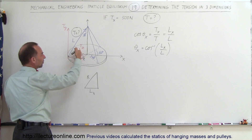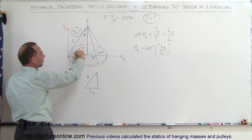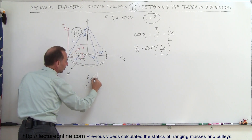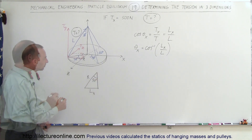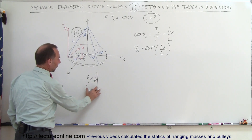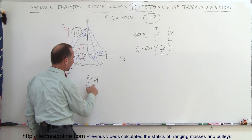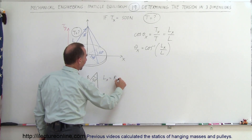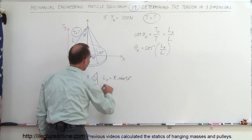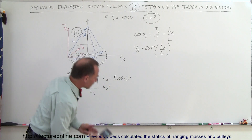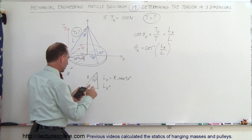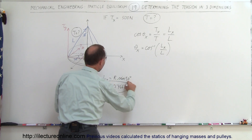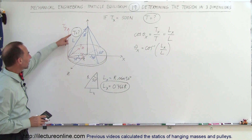Notice that there is a 50-degree angle here. Since L sub x is the opposite side to this angle and R is the hypotenuse, we get L sub x equals R times sine of 50 degrees. Taking the sine of 50 degrees gives 0.766, so L sub x equals 0.766R. Now we have the x-component of the length of this wire.